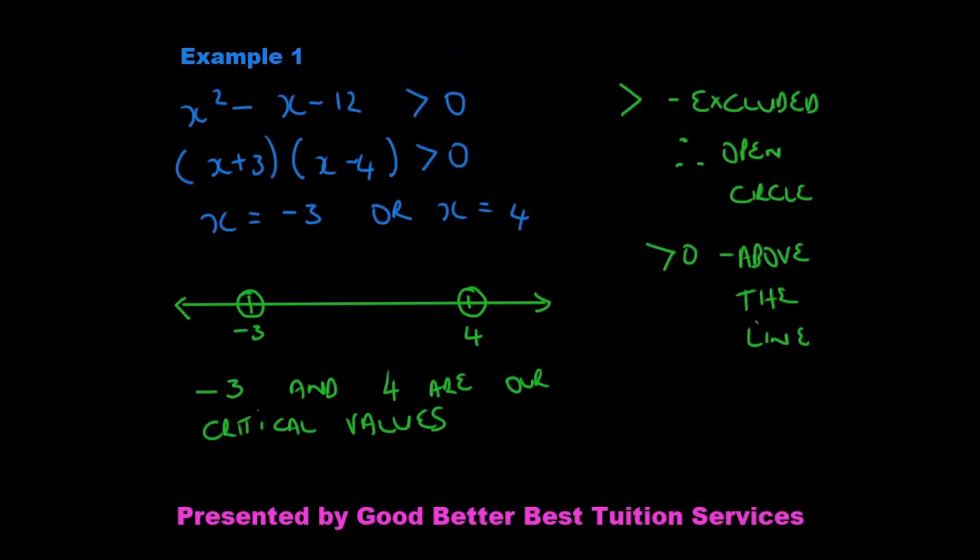Now let's look at example 1: x squared minus x minus 12 is greater than 0. Greater than means that there are numbers that are going to be excluded, and on the number line we'll have an open circle. So what we do is we factorize that and we have (x + 3)(x − 4) is greater than 0. We then find our critical values — in other words, we solve for x. So x is equal to negative 3 or x is equal to 4. Those are our critical values; these are the numbers we are going to plot on our number line.